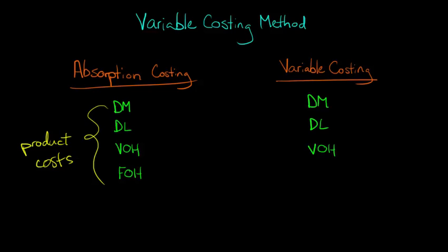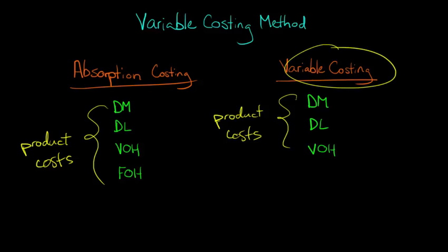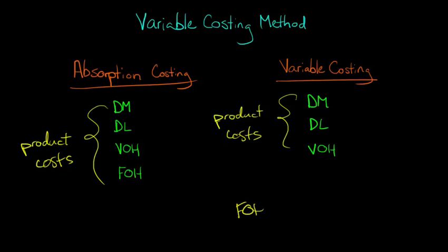Under the variable costing method, we say just three are going to be classified as product costs. The one that's missing is fixed overhead. Under variable costing, fixed overhead is not going to be a product cost. It is instead going to be a period cost.